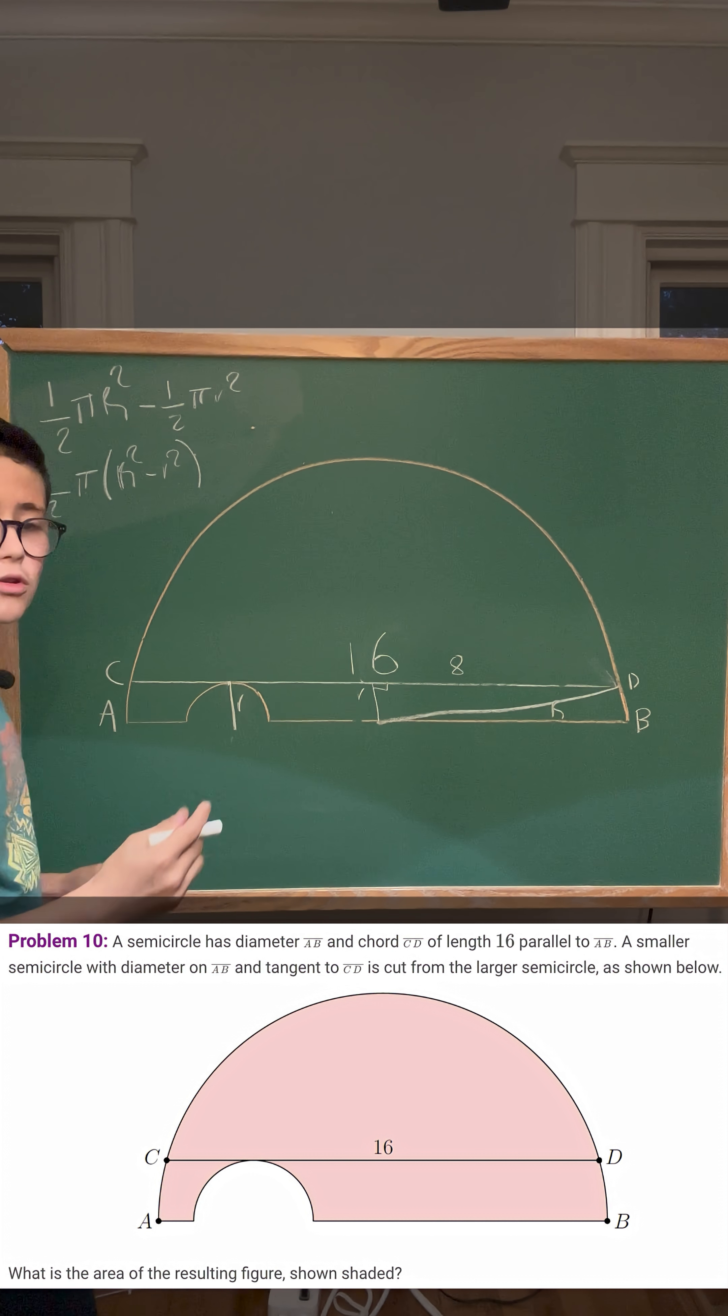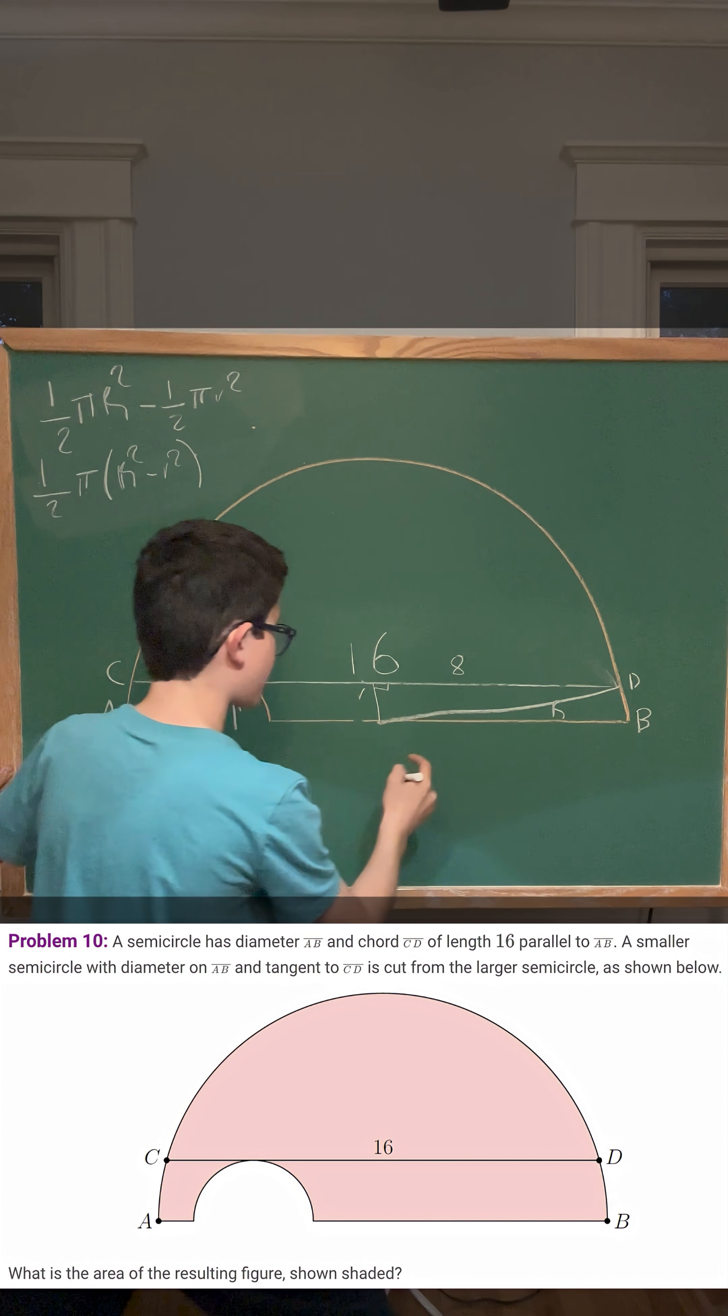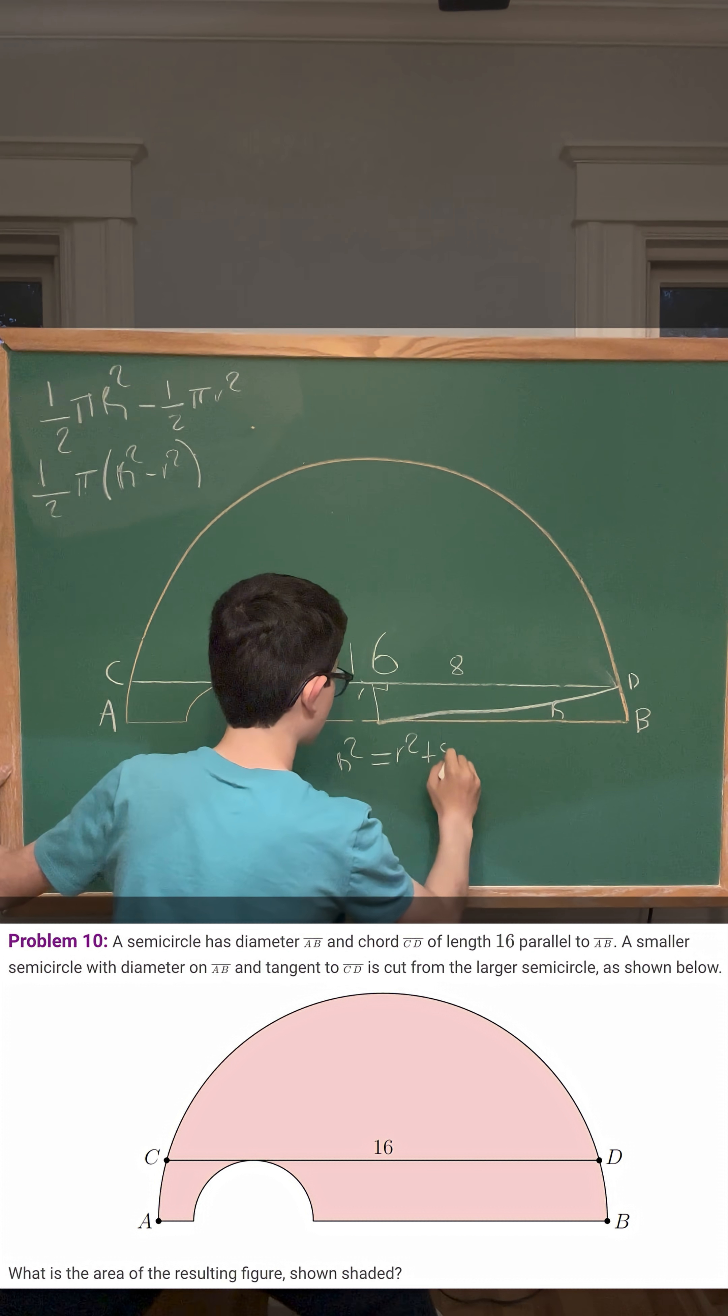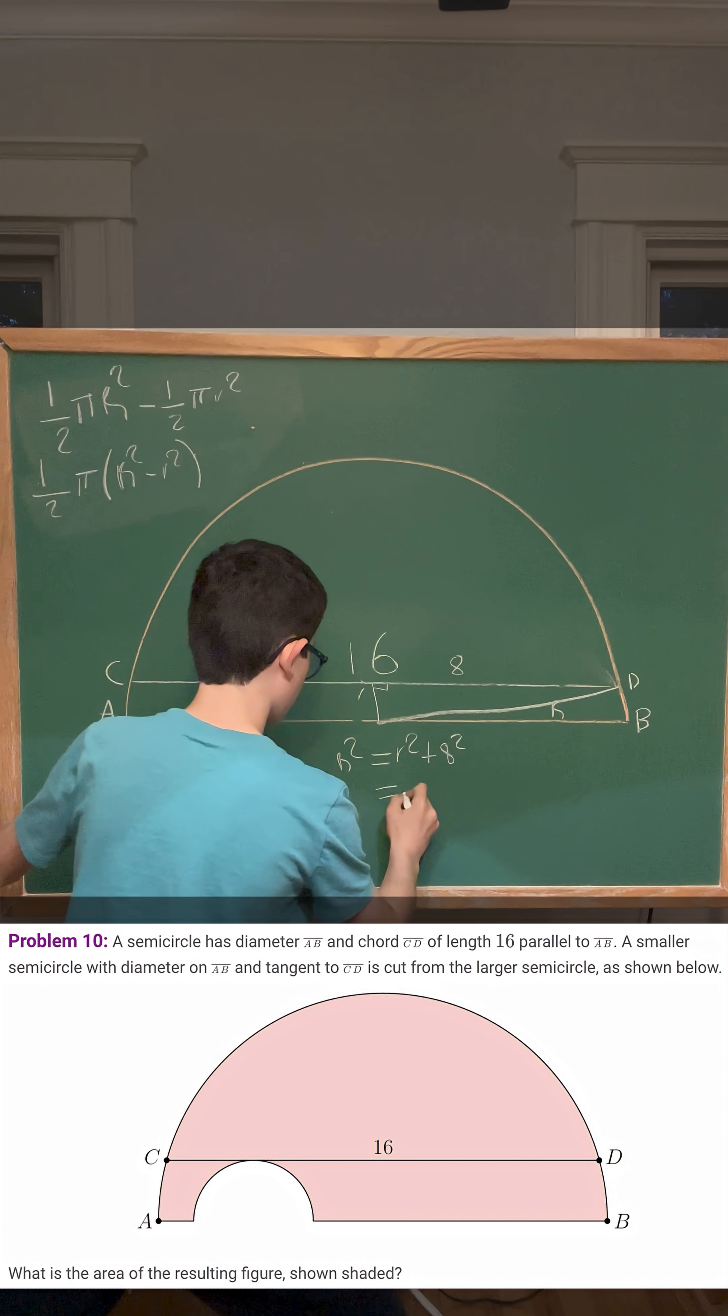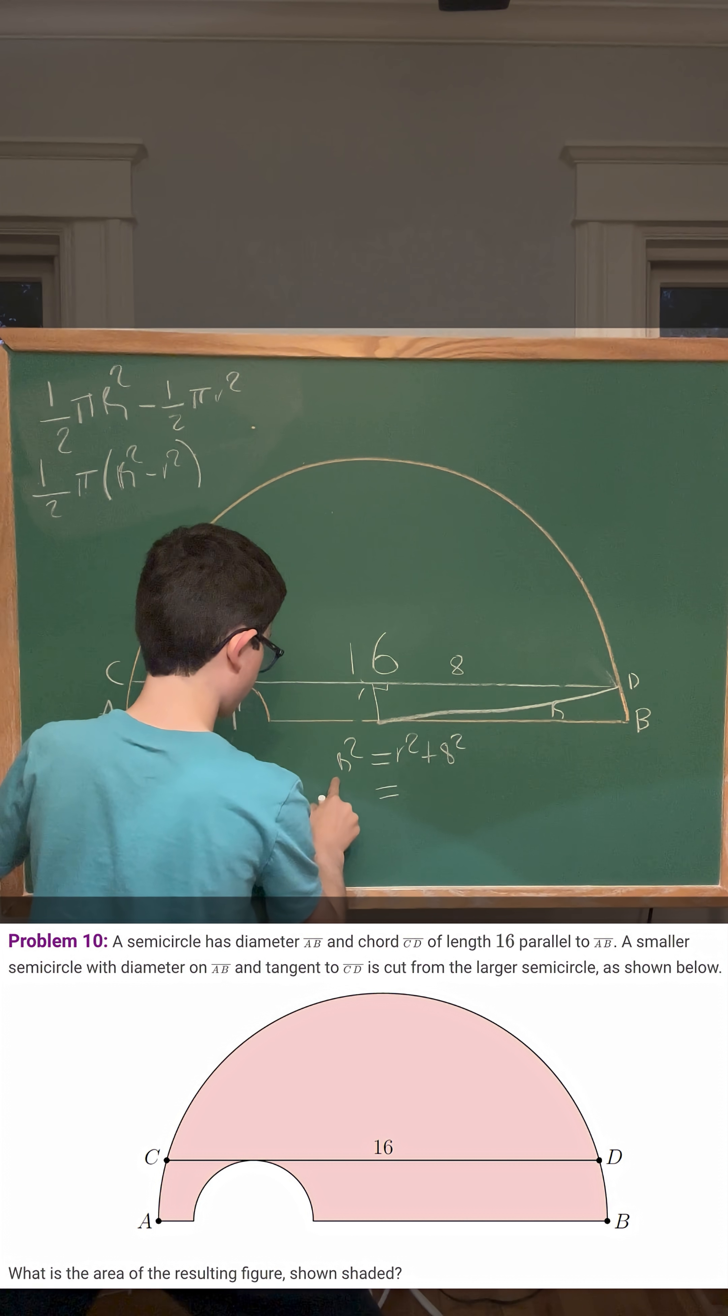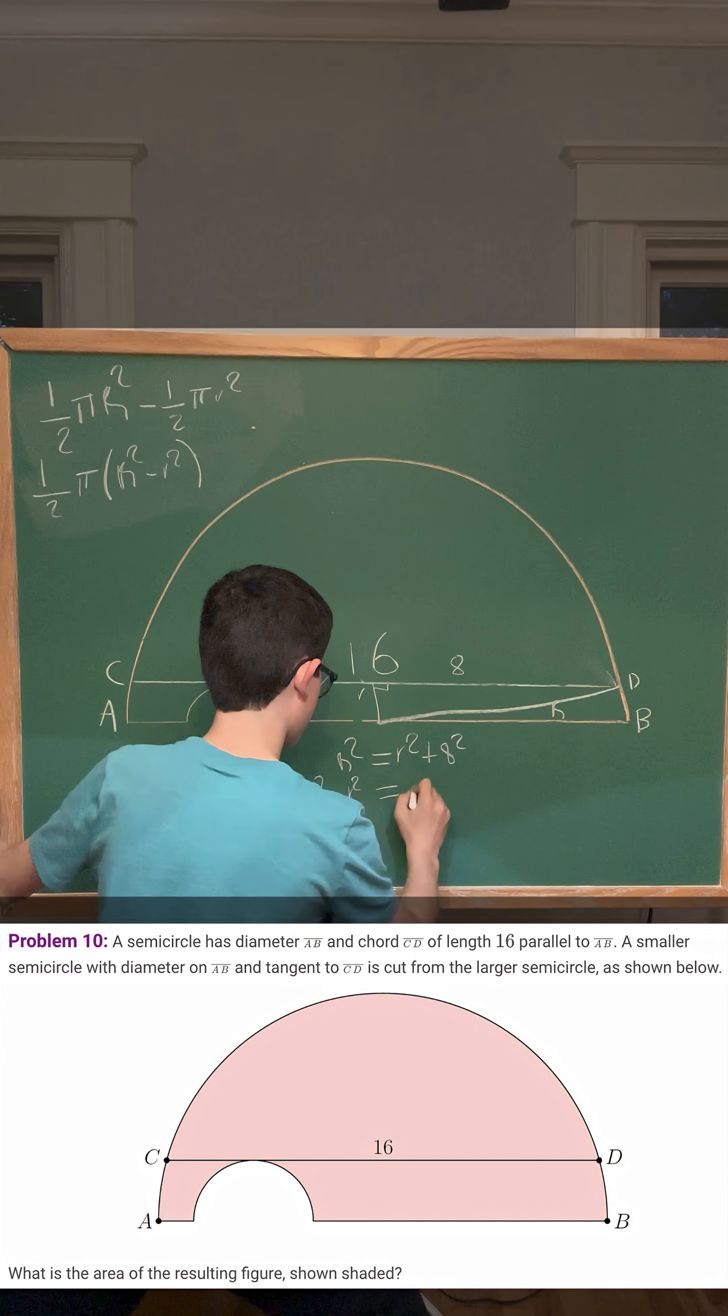We can do the Pythagorean theorem now. We would say that big R² equals little r² plus 8². If we rewrite this, we could make this big R go here—or actually no—this little r on this side should be big R² minus little r² equals 8², which is 64.